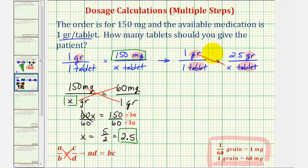So 1 times X equals 1 times 2.5, 1 times X is X, 1 times 2.5 is 2.5, and therefore, if the order is 150 milligrams, which is equivalent to 2.5 grains, then you will have to give the patient 2.5 tablets.